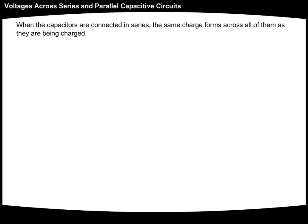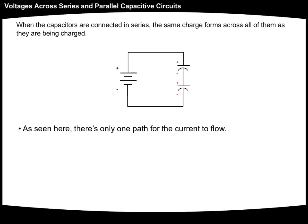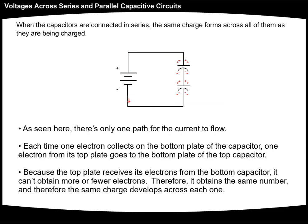When the capacitors are connected in series, the same charge forms across all of them as they are being charged. This diagram shows how this occurs. As seen here, there's only one path for the current to flow. Each time one electron collects on the bottom plate of the capacitor, one electron from its top plate goes to the bottom plate of the top capacitor. Because the top plate receives its electrons from the bottom capacitor, it can't obtain more or fewer electrons. Therefore, it obtains the same number, and the same charge develops across each one.